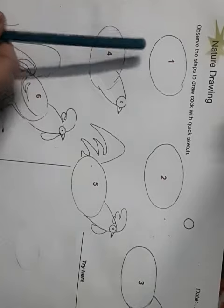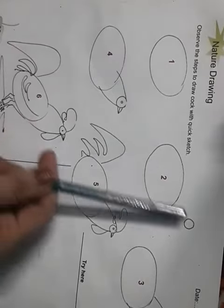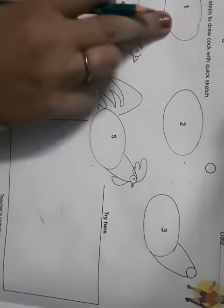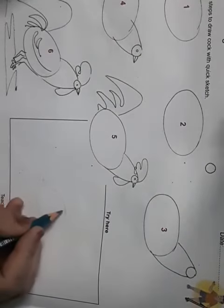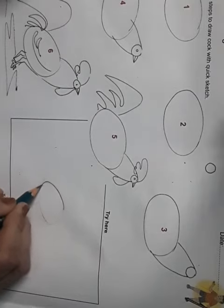In your book these steps are given. Step 1, 2, 3, 4, 5 and 6. So by following these steps we will start drawing it here. So let's start with step 1. In step 1, 1 circle is given. So you will draw 1 circle.